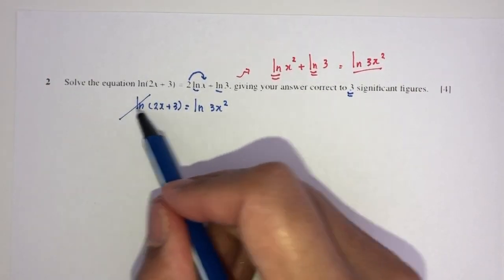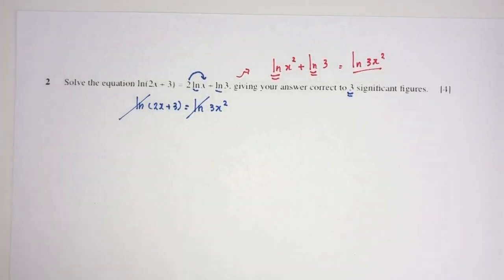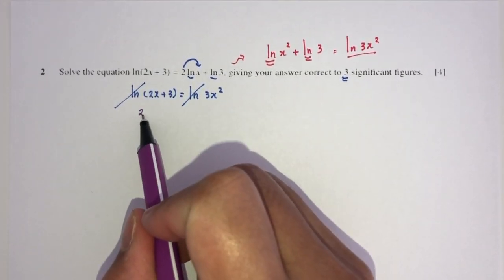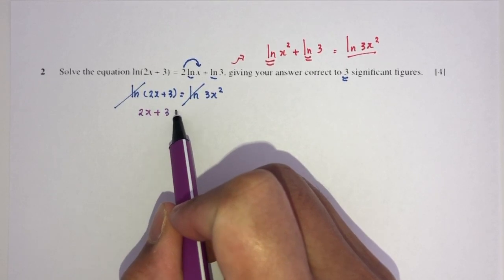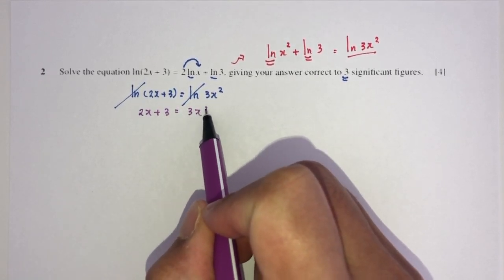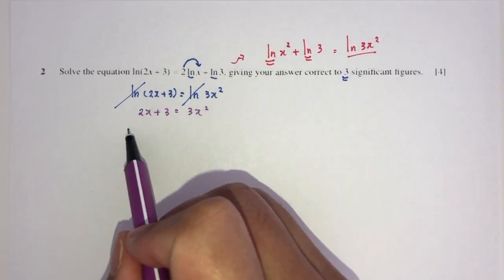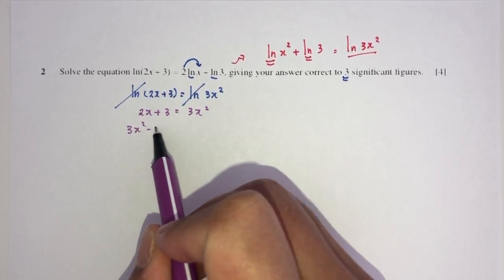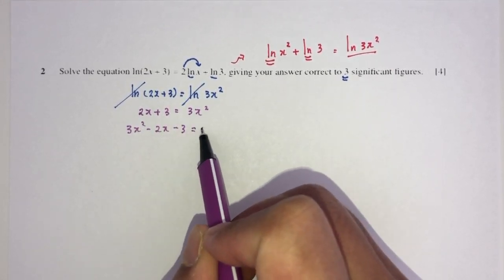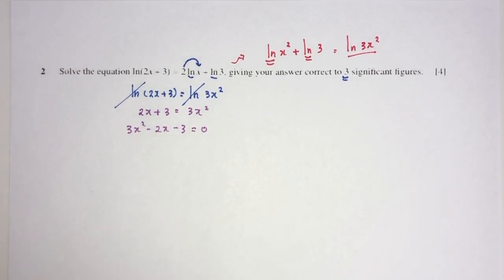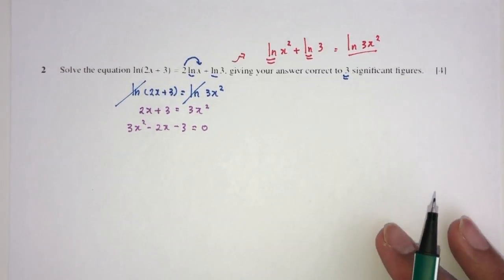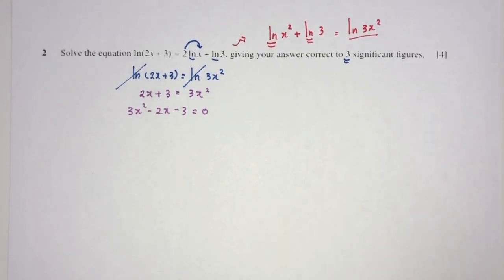Because we have ln on both sides, it will cancel out. We will have 2x plus 3 equal to 3x squared. Set everything to one side, you will have 3x squared minus 2x minus 3 equals 0. Since the question asks you for the value of x correct to 3 significant figures, you will have to use your formula.